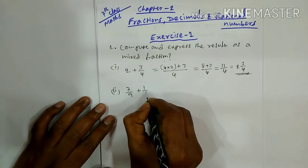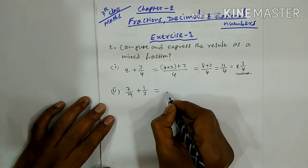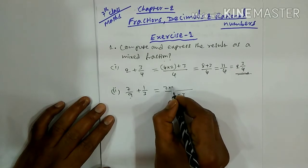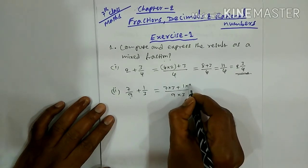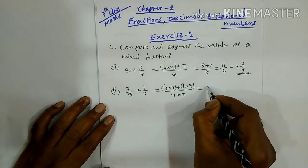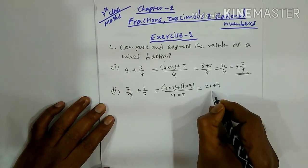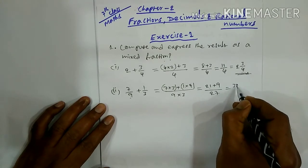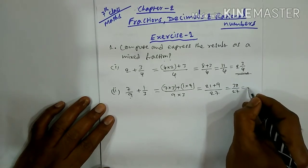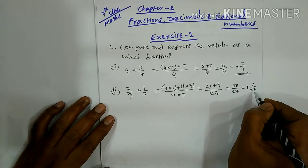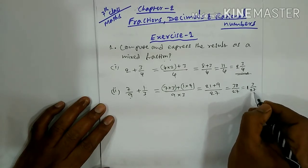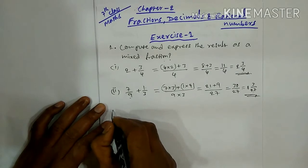Second bit: 7 by 9 plus 1 by 3. The LCM of 9 and 3 is 9. Cross multiplication gives 7 into 3 plus 1 into 9, which is 21 plus 9 equals 30 by 27. Converting to mixed fraction: 27 ones are 27, plus 3 is 30, so this is 1 and 3 by 27.